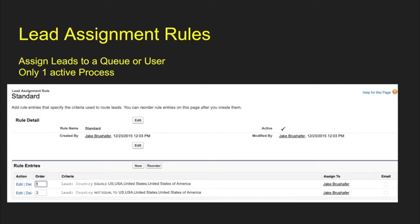Next is lead assignment rules. When a lead comes in through something like web to lead, you can assign the lead to a queue or user. You can also, when you create leads in the system, automatically use lead assignment rules. One thing to note: you can only have one active process per org. You can have multiple processes created, but only one active at a time. Whenever you create your rule entries, put your most restrictive criteria at the top and your least restrictive criteria at the bottom so your catch-all at the bottom doesn't catch everything right away.